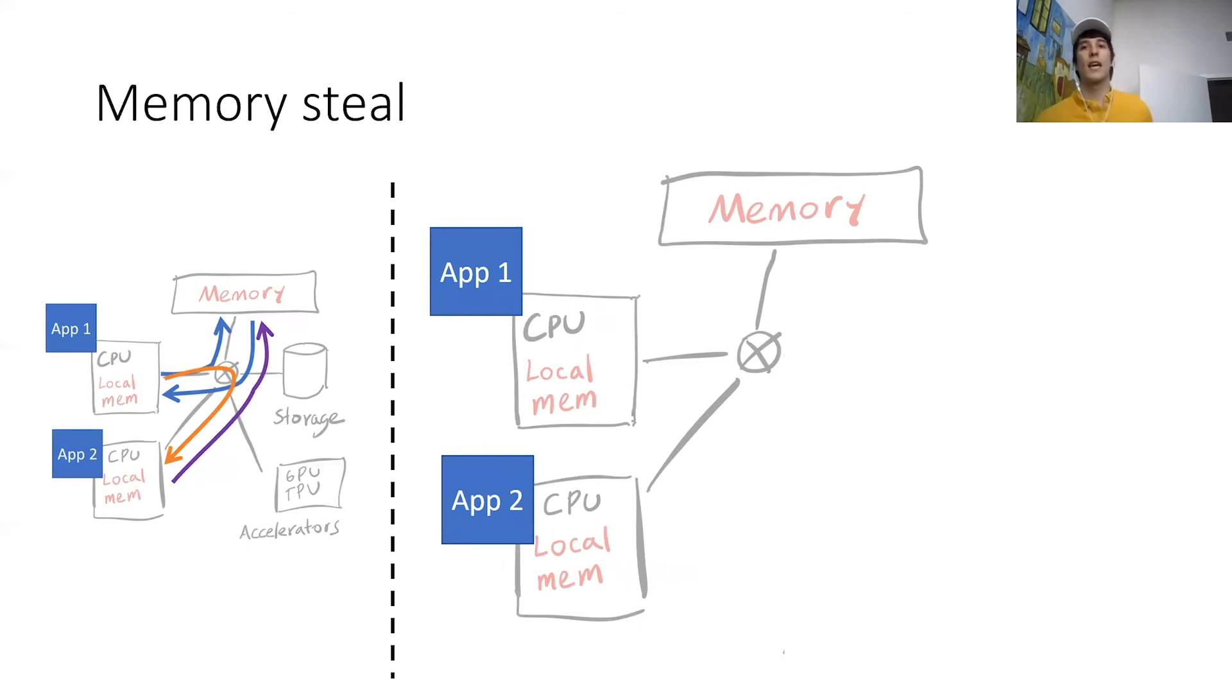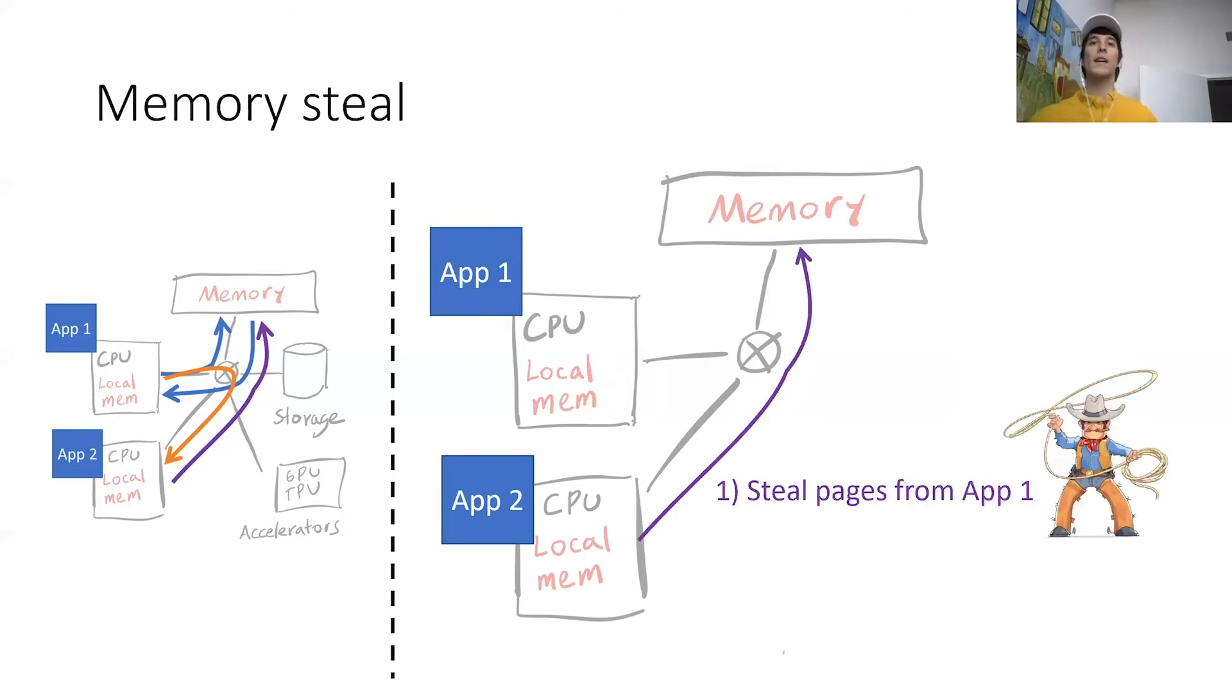The second abstraction is a memory steal. So steals are very similar to a grant, but it is actually performed by the recipient instead of the sender. For example, app2 can request to steal pages from app1, and then the memory node will essentially do the permission changes and then notify app1 that those pages are now gone.